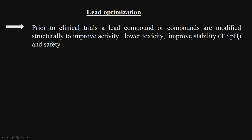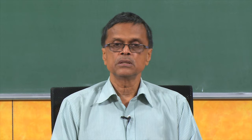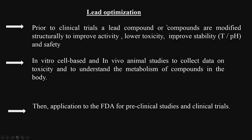That is the lead optimization part. You collect data from cell-based studies or animal studies, understand the metabolism of these compounds, whether the compound is stable at pH, whether it is stable in the liver region. The best compound may be very unstable due to liver enzymes, while the second best may be more stable. You shortlist one or two that not only satisfy activity but are also quite stable. That is lead optimization.